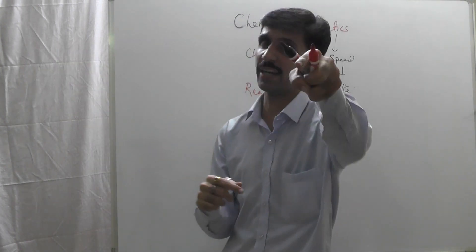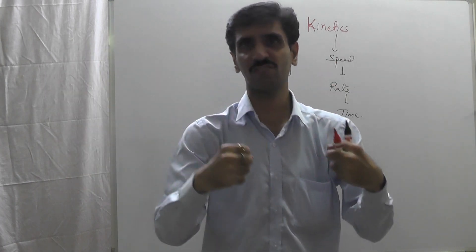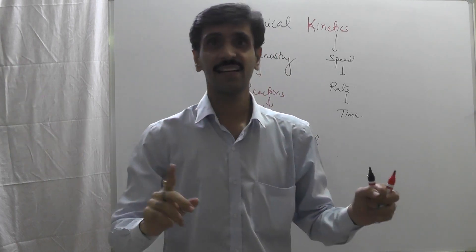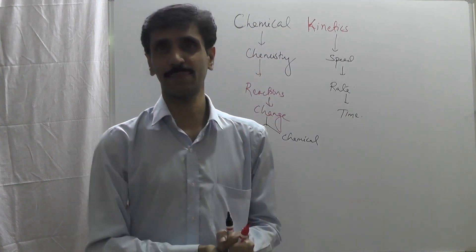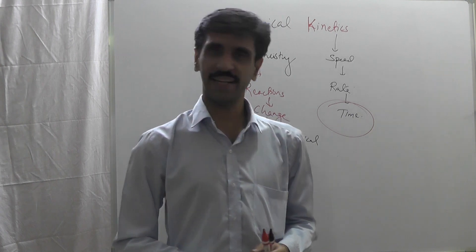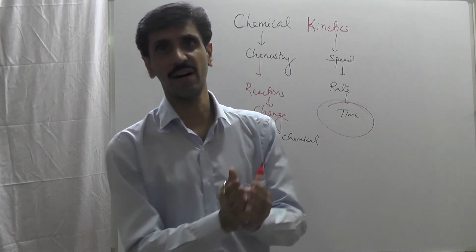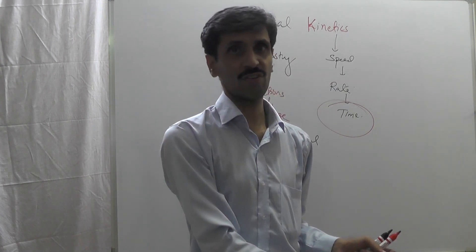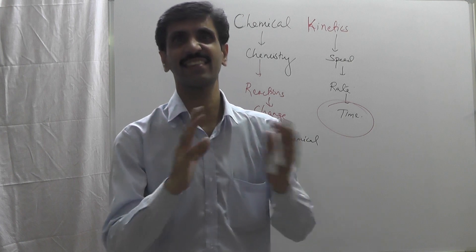The initial species we call 'before the change' and the final one 'after the change' — technically known as reactants and products. How they are getting converted is not the prime concern here, but the time in which it happens is the prime concern of this chapter. So chemical kinetics is about the time required for a reactant to get converted into products.